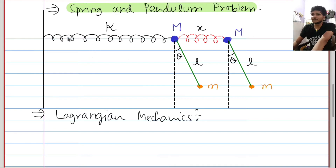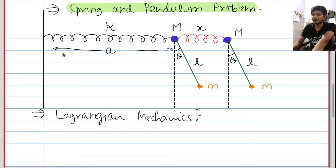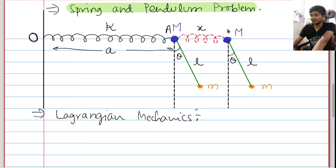So we have some nomenclature. This is your origin O. From origin O you have a mass M at point A, and then we can take it to point B after stretching it. This point is C for your small m, and C comes at point D because of this stretching.